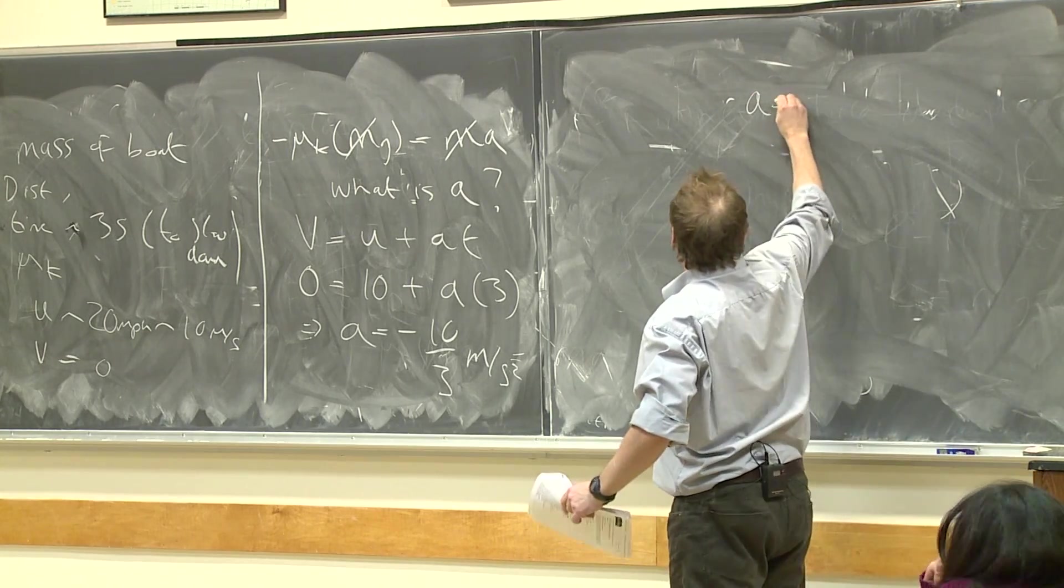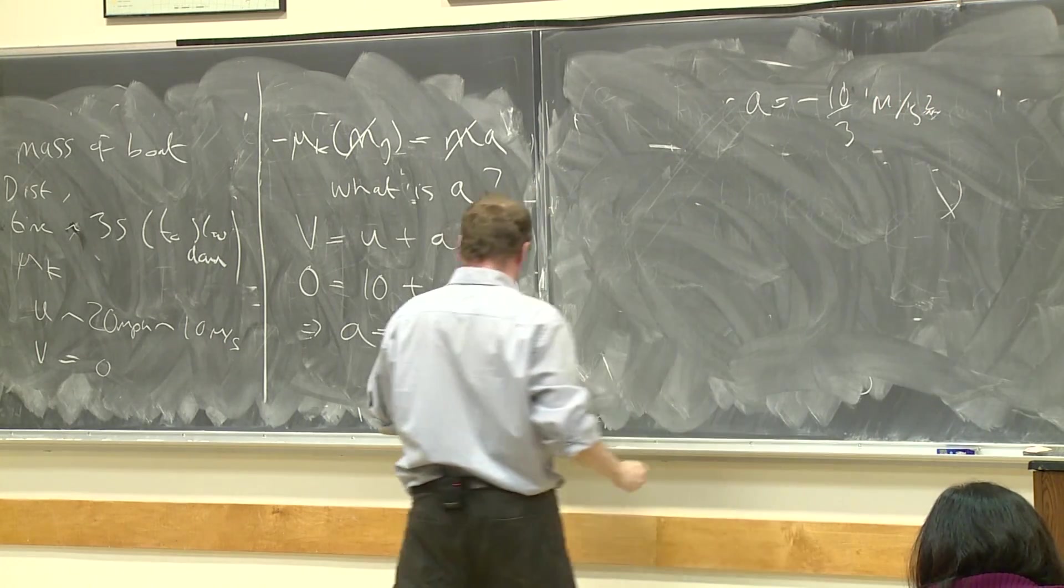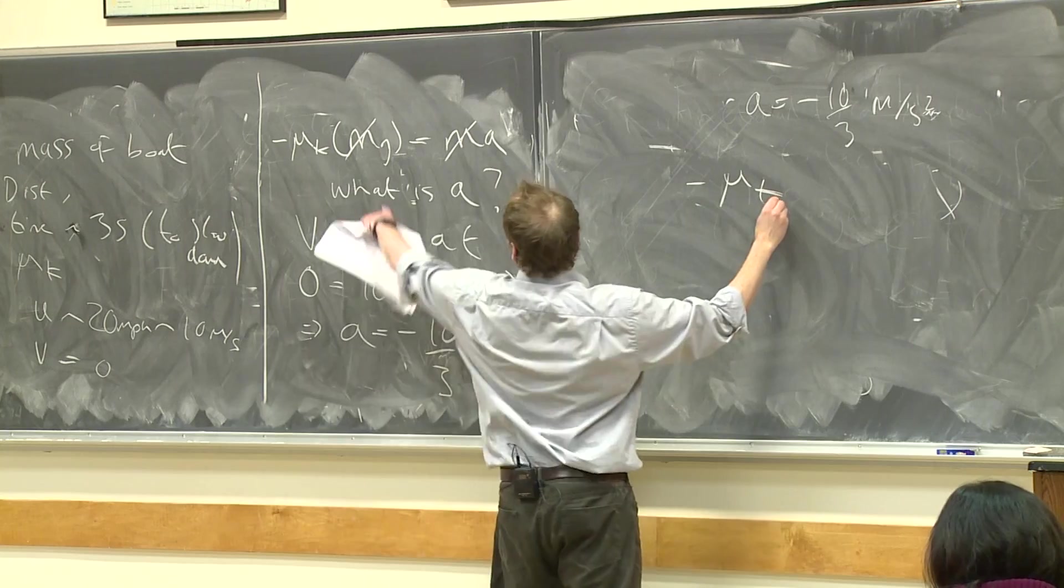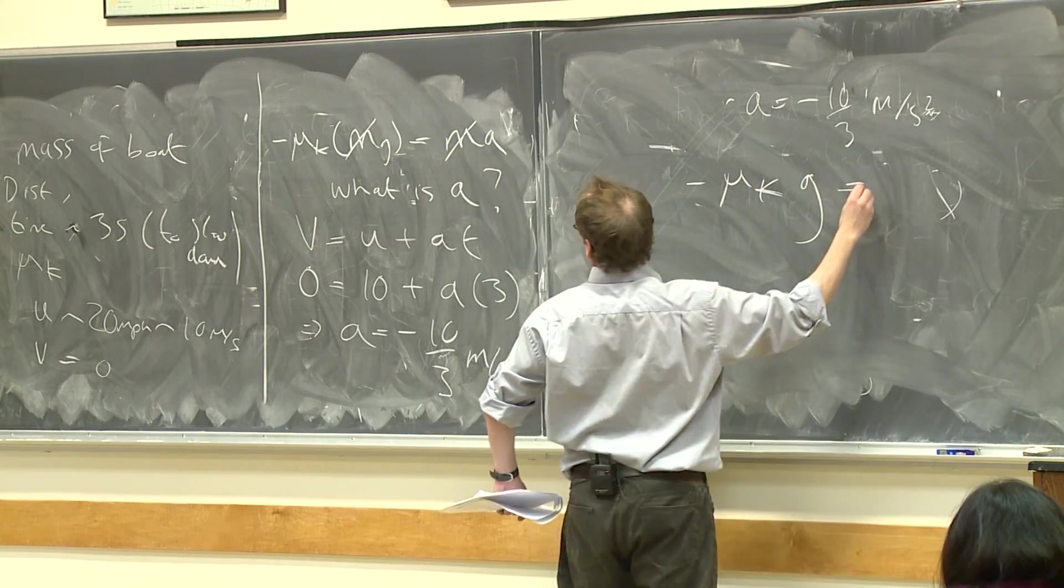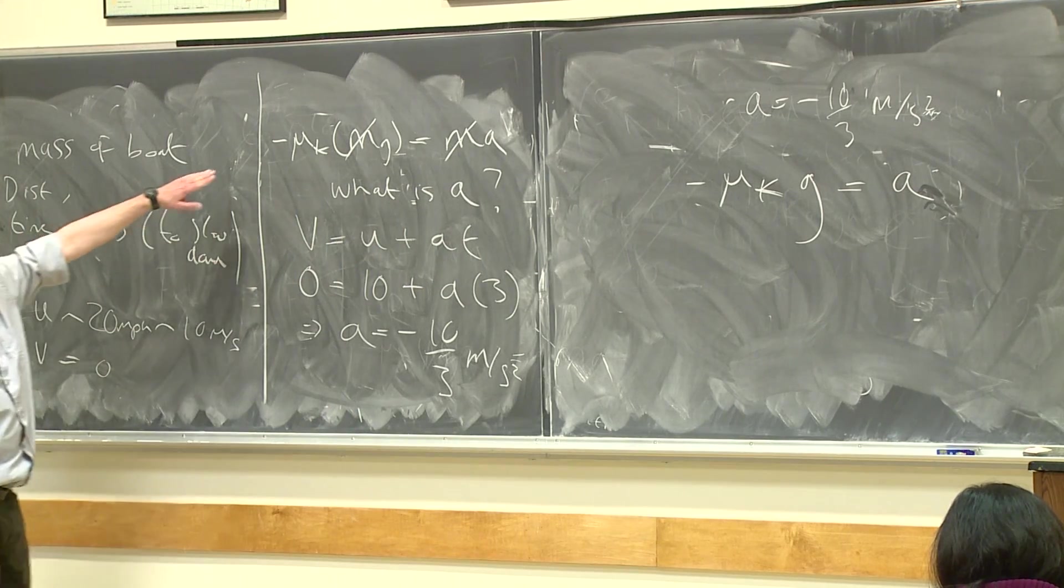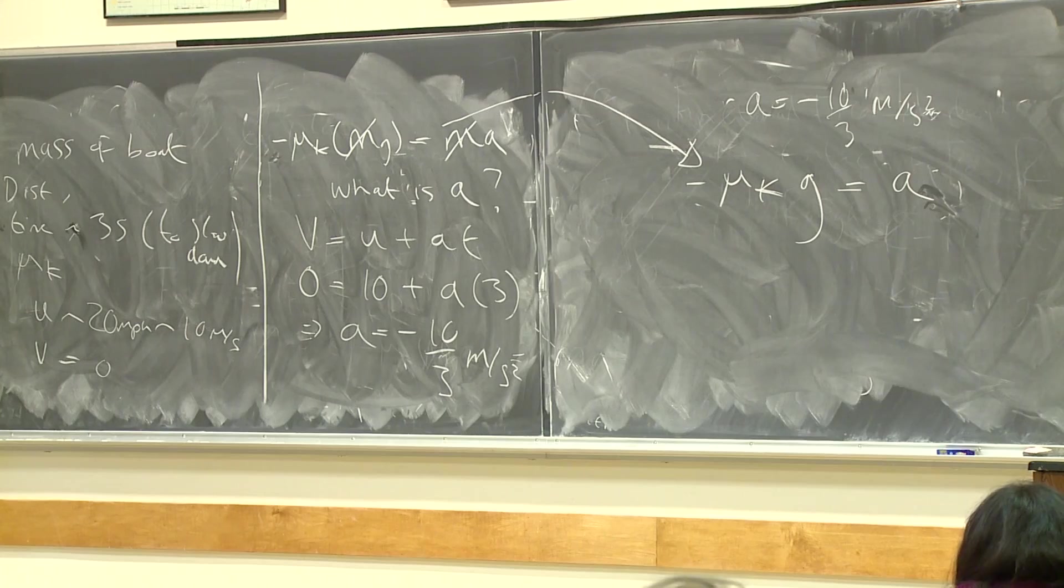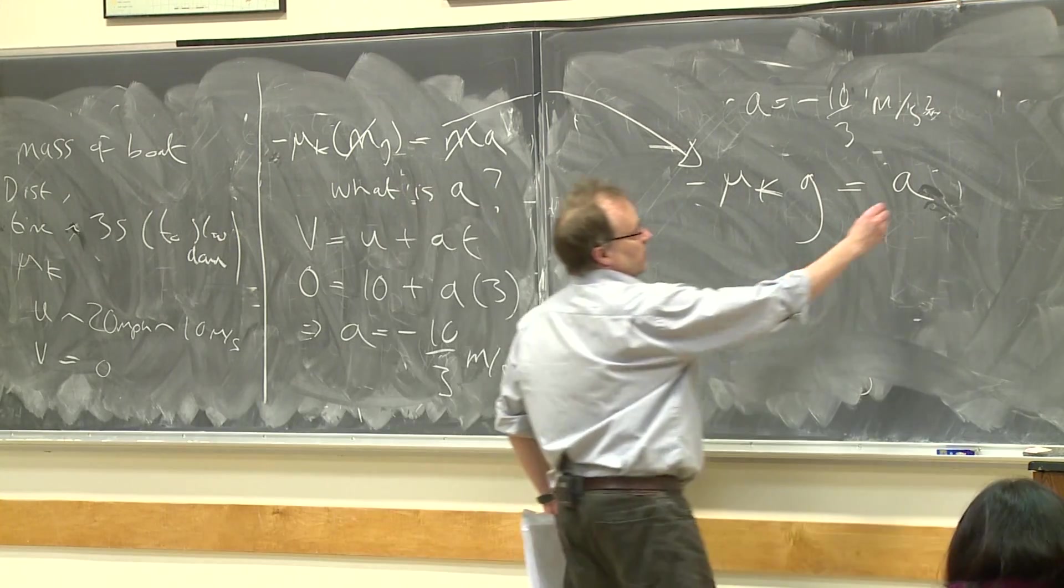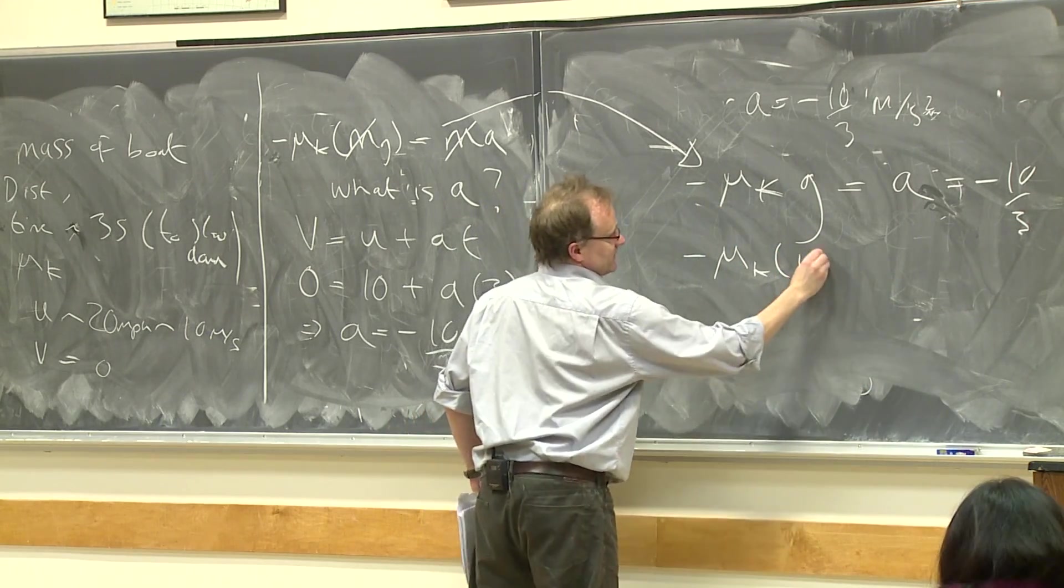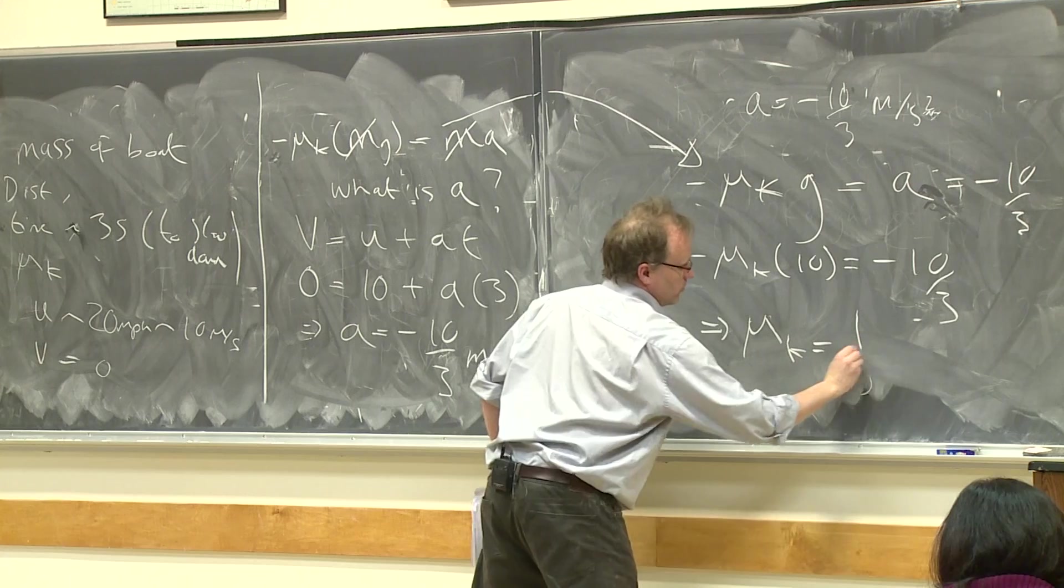So we have a equals minus 10 over 3 meters per second squared, and the equation that we had before is simply that minus μk times by g is equal to a. So all we need to do now is put in some values and we get a value for μ. So this is minus 10 over 3. g we're going to say is 10, so I have μk times by 10 is equal to minus 10 over 3, which tells us that μk is equal to one over three.